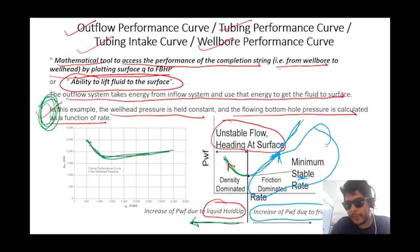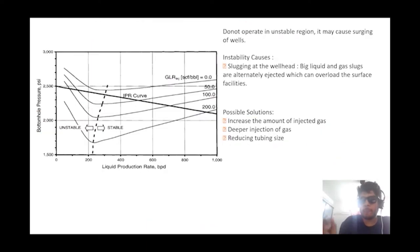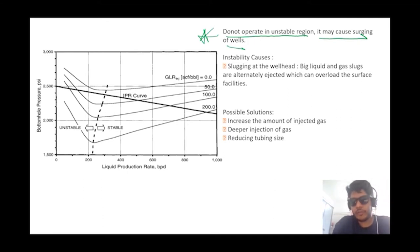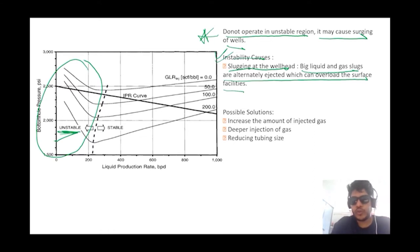To repeat: the left side increase of Pwf is due to liquid holdup, and the right side increase is due to friction. Do not operate in the unstable region because it may cause surging of wells. The possible cause is slugging at the wellhead — large liquid and gas slugs are alternately ejected, which can overload the surface facilities. We don't want to produce in this unstable zone because potential slugging can cause disturbances at the downstream end.